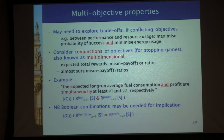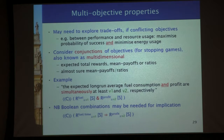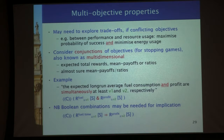Another class of properties I wanted to mention is multi-objective properties. In many cases, single-objective properties are not enough. Even for the Google car, the primary objective is to get from A to B, but there is also another objective — it has to be safe. What you want to do naturally is consider a conjunction of properties: safety and getting from A to B. But this is not the same as taking a conjunction in the RPATL logic, because each of these would have separate probability records. So this is what we call multi-objective, also known as multi-dimensional.